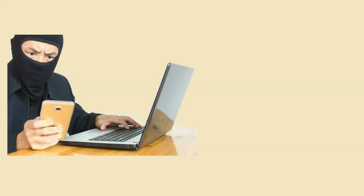The first and foremost step toward securing a cell phone is physical security. In addition to training employees always to have their cell phones under their physical control, other safeguards should include using a screen lock. A screen lock is the most basic step toward physically securing your cell phone. Phones should be locked with a pattern, PIN, or password. This will prevent unauthorized access to your phone and your data.